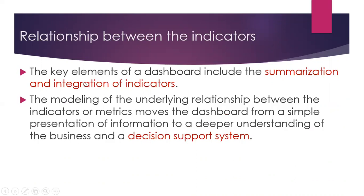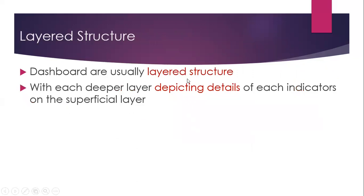There should be a relationship between indicators. The key elements of the dashboard include the summarization and integration of key performance indicators. The modeling of the underlying relationship between the indicators moves the dashboard from a simple presentation of information to a deeper understanding of business and a decision support system. The dashboard is usually a layered structure with one, two, or three layers, with each deeper layer depicting details of each indicator on the superficial layer — a drill-down kind of structure.